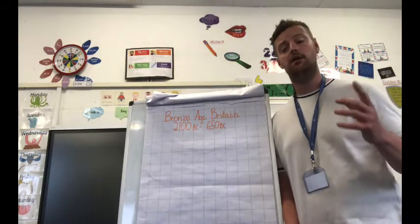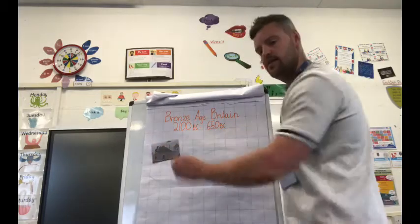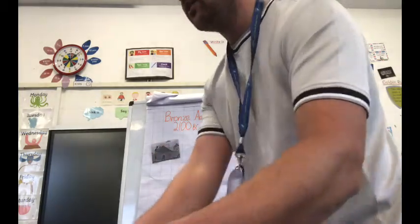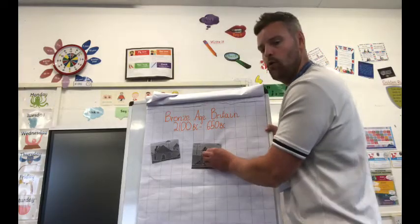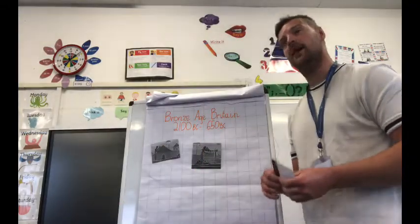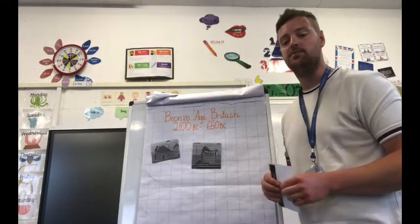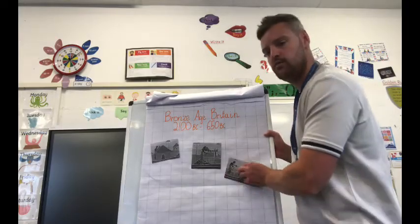They built homes. They weaved with cloth and yarn, as he mentioned, to keep himself warm. They also would eat wheat and barley, so they would farm their own crops. And they would also keep animals too. So we've got the crops there.